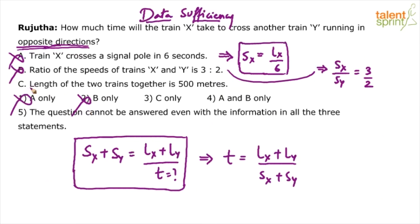Look at statement C. Length of the two trains together is 500 meters. This here says length of the two trains together is 500 meters. Which means what? Lx plus Ly equals 500. Will this give us the answer? No. Because I need to find out time, which needs four variables. Only Lx plus Ly is given. So 500 by Sx plus Sy, but still Sx and Sy are not known to us. So C alone is not sufficient. Hence option three is also eliminated.